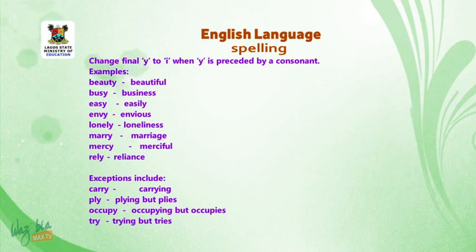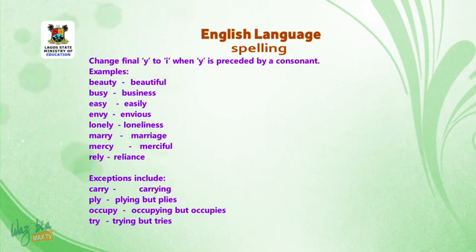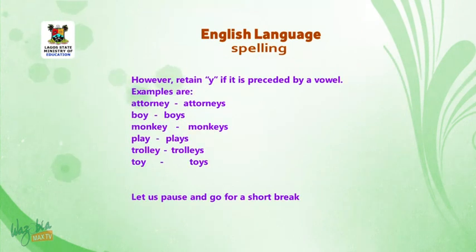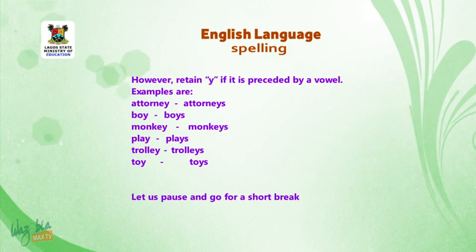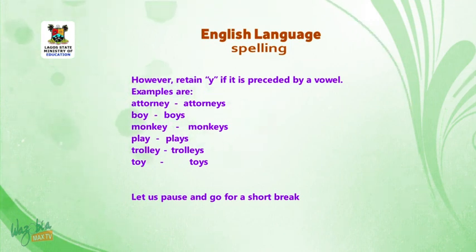Exceptions include: carry — carrying, ply — plying but plies, occupy — occupying but occupies, try — trying but tries. However, retain Y if it is preceded by a vowel. Examples: atony, boy — boys, monkey — monkeys, play — plays, trolley — trolleys.